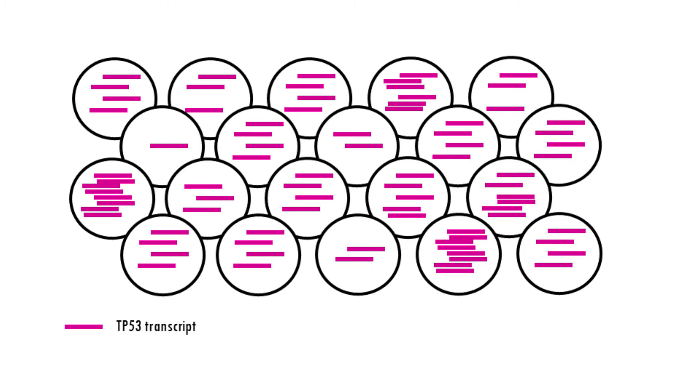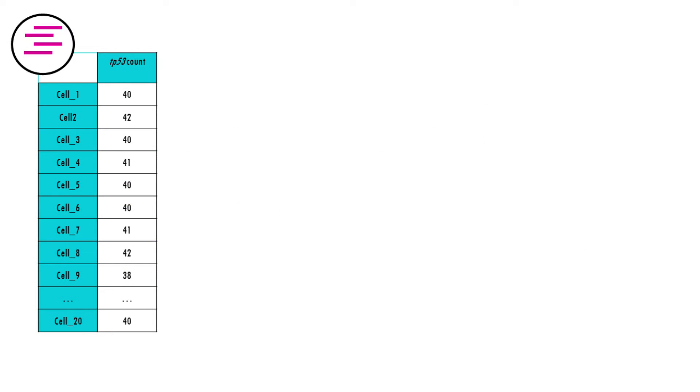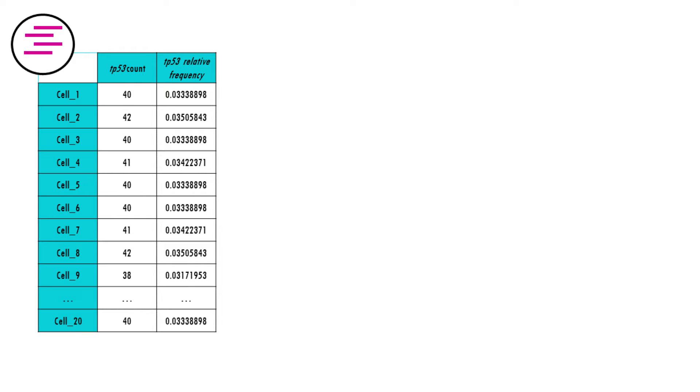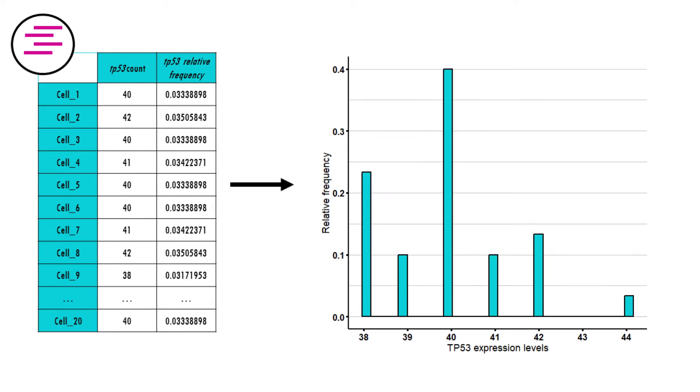For each cell we have a value, which is the transcript counts of TP53. If we divide the counts in each cell by the total number of counts across all cells in the sample, we get relative frequencies. So now let's plot the relative frequencies of the different expression levels in the sample to get a histogram, like this one.